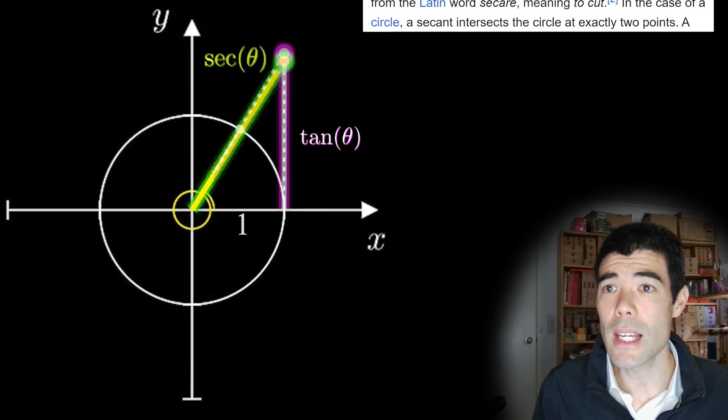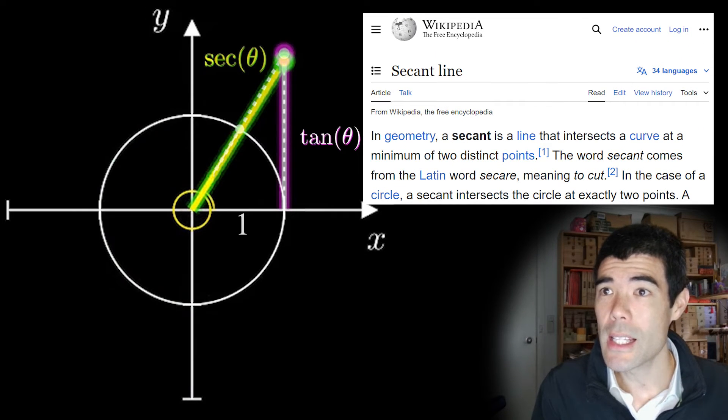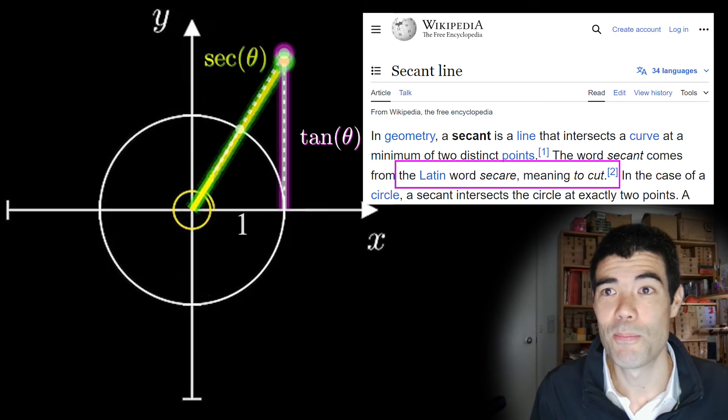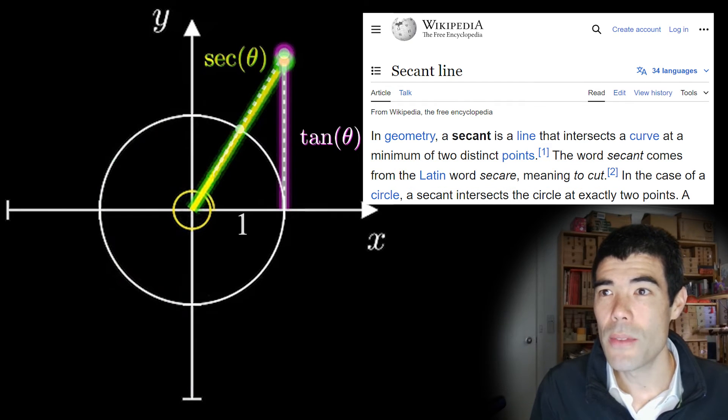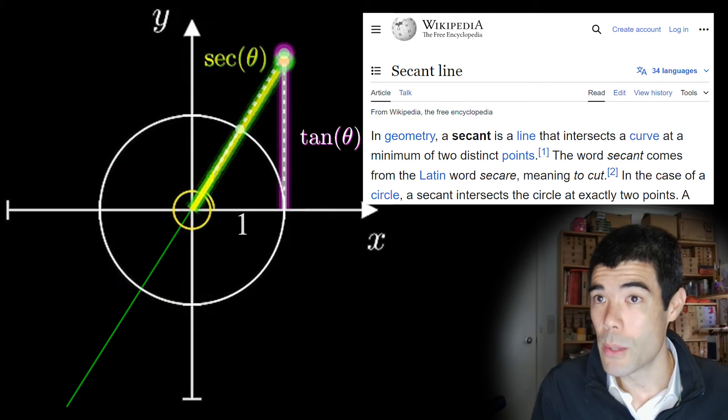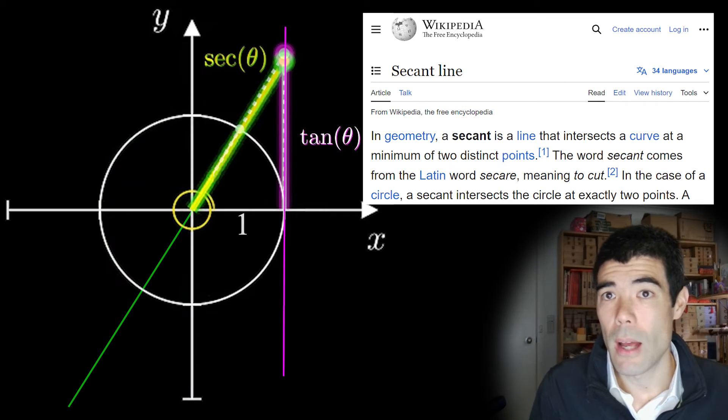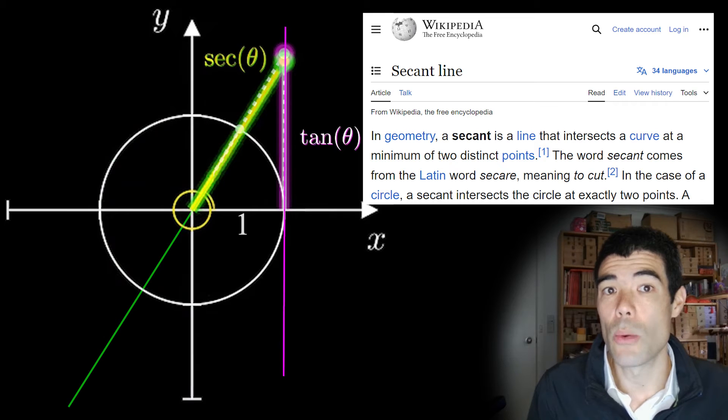The word secant, by the way, means in geometry, a line that intersects a curve at a minimum of two distinct points, apparently coming from the Latin word secare, meaning to cut. And you might say, well, this line segment only seems to cross the unit circle at one point. OK, but if we were to extend the line, then it would cross at two points compared to the tangent, whereas no matter how far you extend that, it's only going to touch at one point.